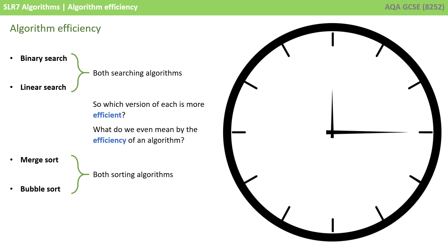Which version of each of these is more efficient? And what do we even mean by the efficiency of an algorithm? Talking about the efficiency of an algorithm is actually quite a complex process, and we look at this in depth in the later half of the video when we go beyond the GCSE specification. But from the point of view of your exam, we're simply meaning here which algorithm is typically quicker at performing a task on a data set.